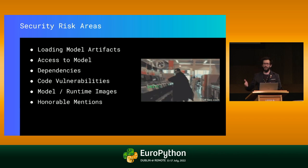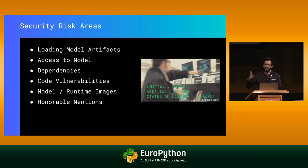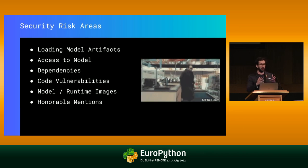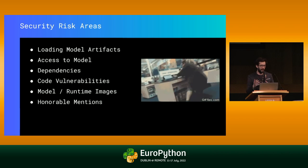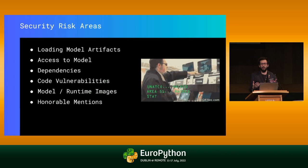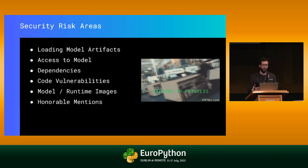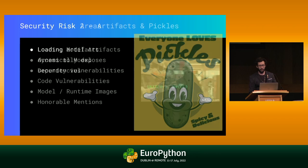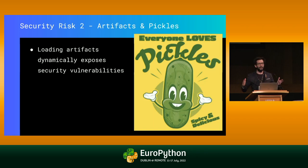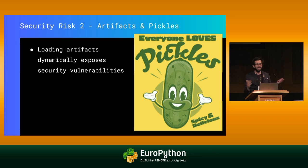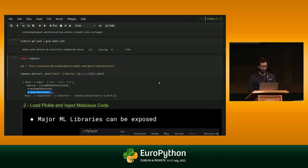Now let's look at each stage of the machine learning lifecycle and how each can be exploited. We'll look at vulnerabilities in loading model artifacts, access to the model, issues with dependencies and supply chain management, code vulnerabilities, model runtime images, and honorable mentions on infrastructure. First: who in the crowd has used a pickle? About 90% have used pickles. We all love pickles and use them on a day-to-day basis. Should we use them? Maybe we shouldn't use them as ubiquitously as we are.